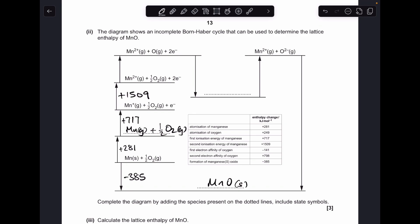And the next arrow, we're going from a half a mole of O₂ gas to a mole of O gas. So that's the atomisation of oxygen, so that's +249.